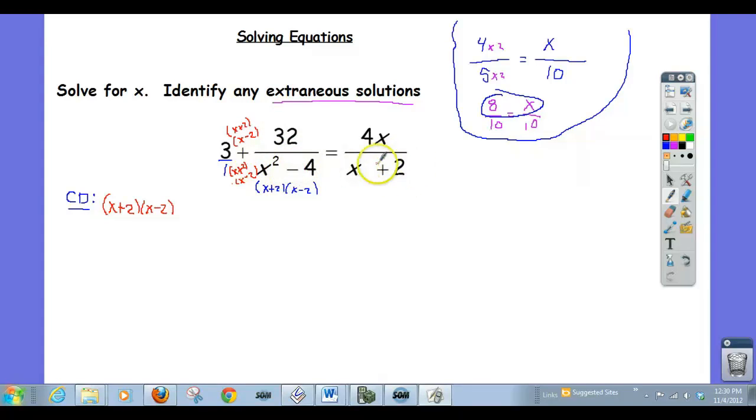And this x plus 2, what's it missing that the common denominator has? It's missing an x minus 2. So I'm going to multiply the bottom by and the top by x minus 2.